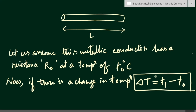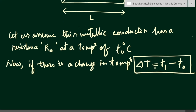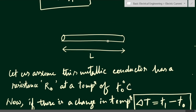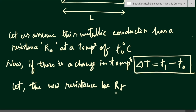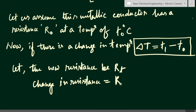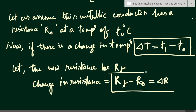When we change the temperature, the dimension of the wire will change — it will expand, increasing its cross-section as well as its length. So the resistance of the conductor will also increase. Suppose there is a change in resistance. Let the new resistance after the temperature rise be Rt. The change in resistance, delta R, is equal to Rt minus R0, where R0 was the initial resistance.